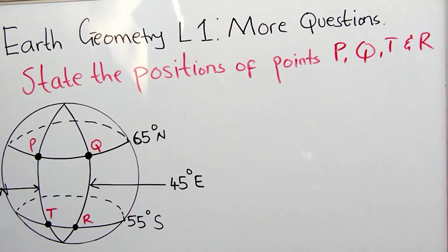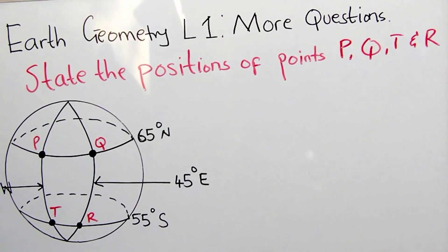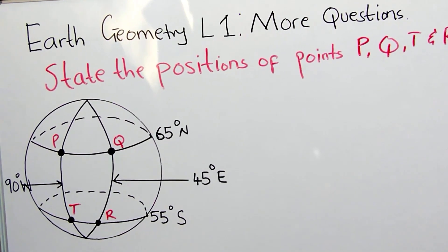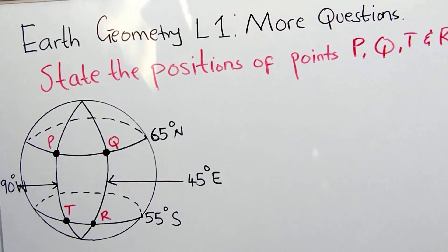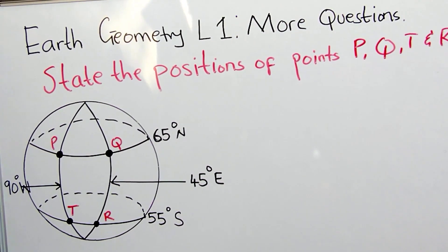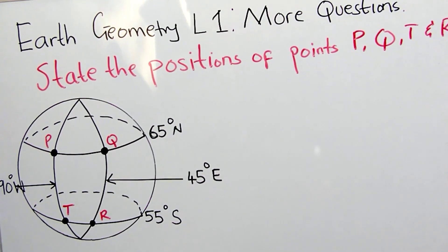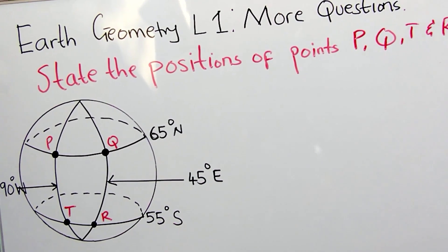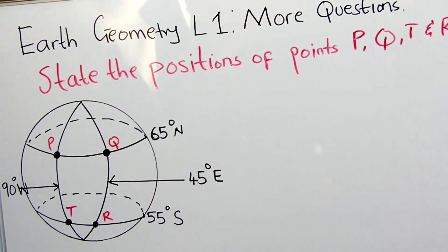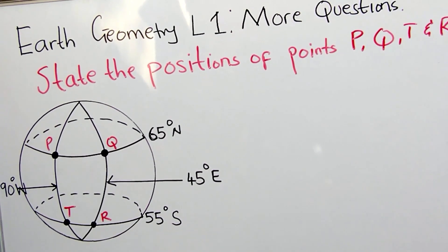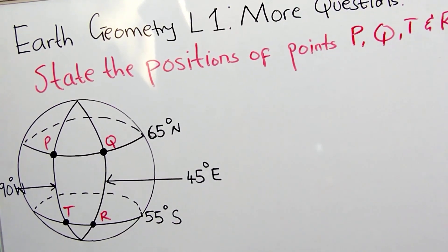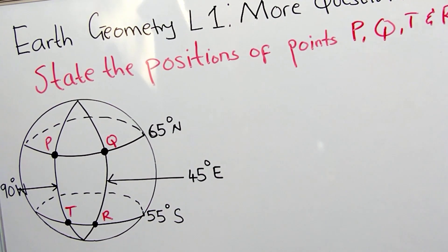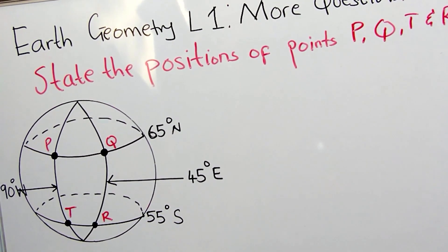Just to do a little recap: in Lesson One, we defined what Earth Geometry is. We said this is concerned with the location of places on the Earth's surface, the calculation of distances, and the determination of time. That is what Earth Geometry is concerned about.